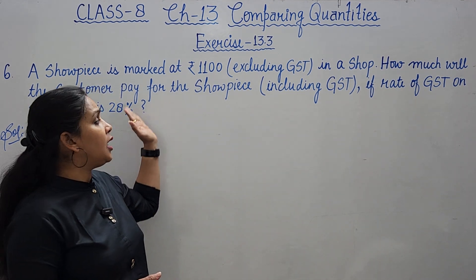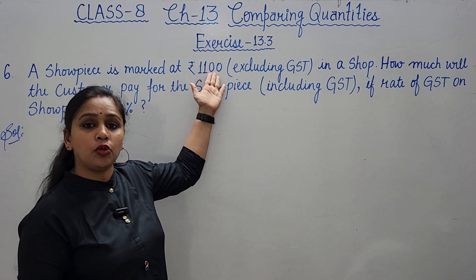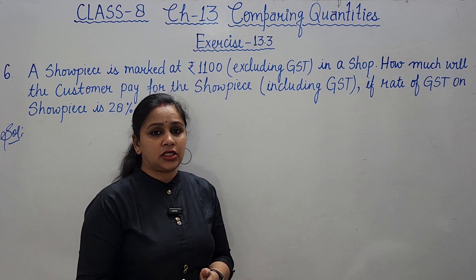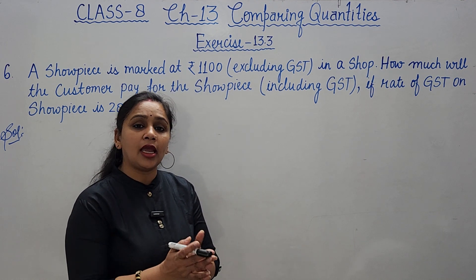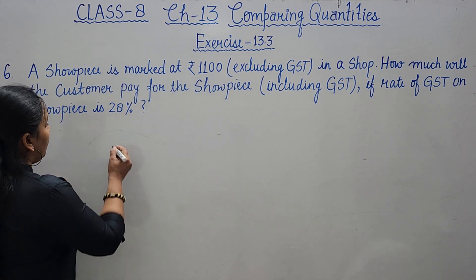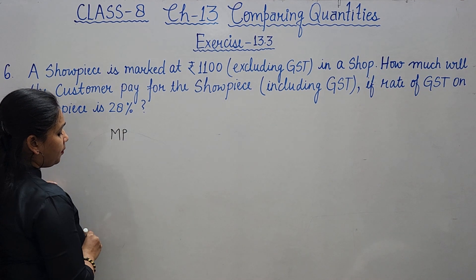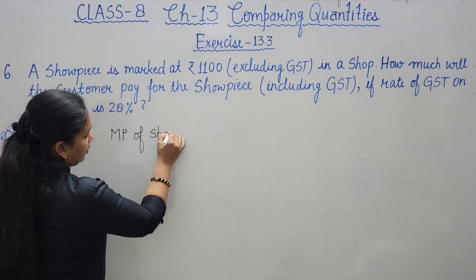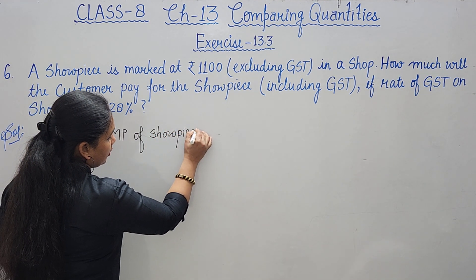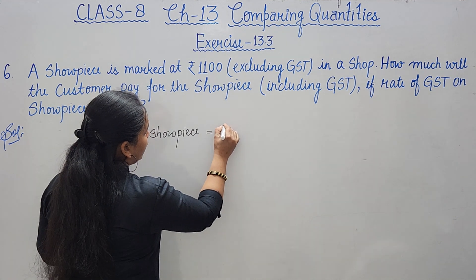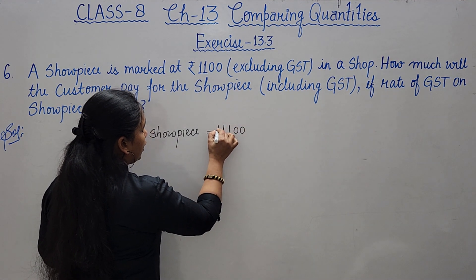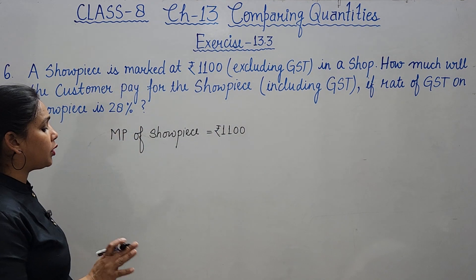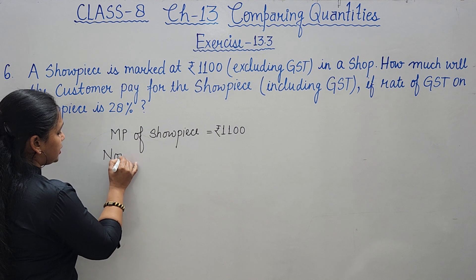If we pay 28% GST on this amount, we will calculate the total amount of the showpiece purchase. So here we note: MP of showpiece is equal to rupees 1100 — that is the marked price. Now we need to calculate 28% on this.